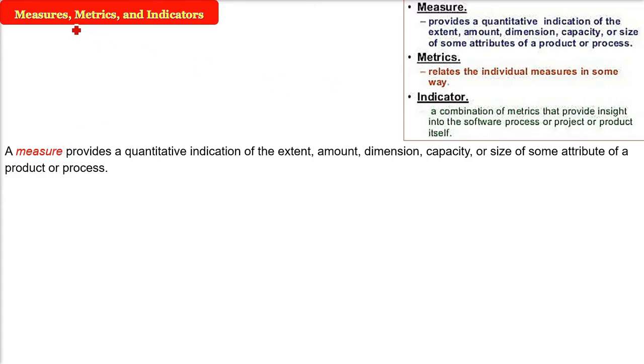Measure. The measure provides a quantitative indication, that is, we are talking about a number. So measure will give you a number, a value. This will give you a quantitative indication of what is the extent, what is the amount, what is the dimension, what is the capacity or the size of certain attribute or property of a product or process. It will give us a number of various aspects of certain attributes of a product or process.